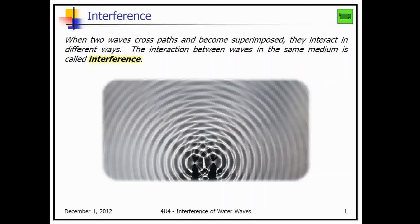So whenever we have two waves that cross paths, and these waves are superimposed on top of each other, they interact in different ways. The interaction between waves in the same medium is called interference. If we're talking about the interaction of two waves in water — two water waves — that would be interference.